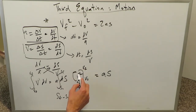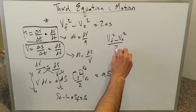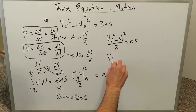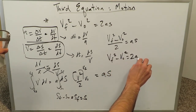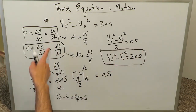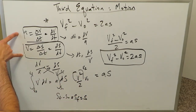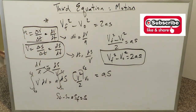Applying the definite integral limits: vf squared over 2 minus vo squared over 2 equals a times s, which gives (vf squared minus vo squared)/2 equals as. Multiplying both sides by 2: vf squared minus vo squared equals 2as. The third equation of motion is derived using integral calculus — integrating the rate of change relationship involving both the velocity and position derivatives. The integral procedure was much easier than the algebraic one.